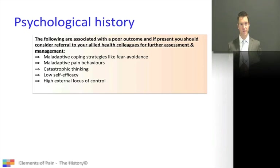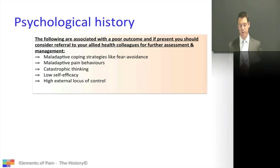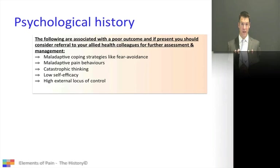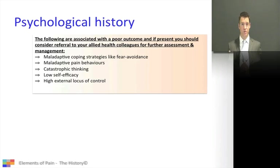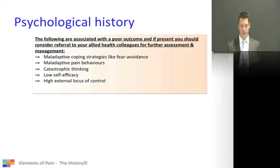There are a number of psychological things you need to consider. If patients have a couple of these — the so-called yellow flags — you would consider sending them to allied health colleagues or enrolling them in a pain management program to change their psychology. You need to consider coping strategies, pain behaviors, behaviors and cognitions that may be maladaptive, and three big things: pain catastrophic thinking, locus of control, and patient self-efficacy.